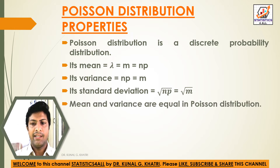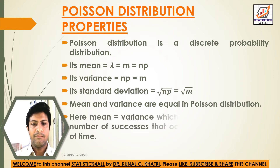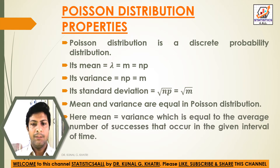Mean and variance are equal in Poisson Distribution. The mean is equal to the variance, which is equal to the average number of successes that occur in the given interval of time.